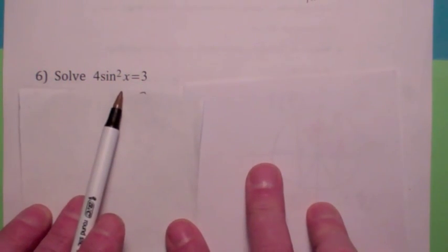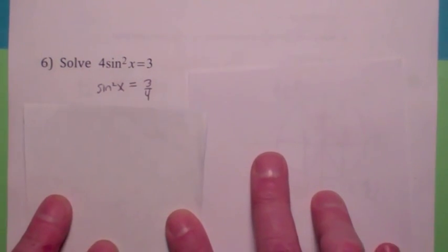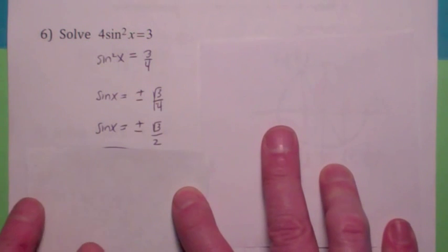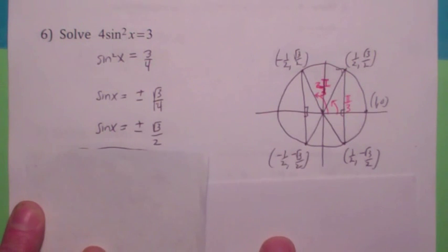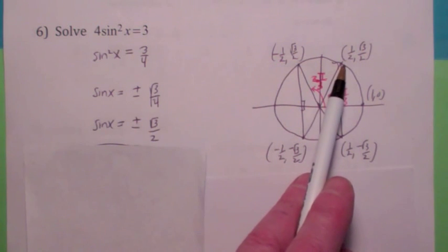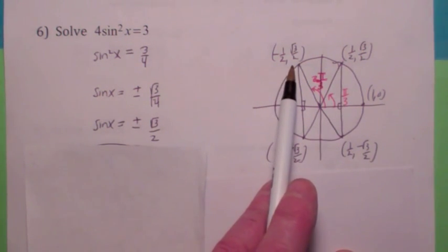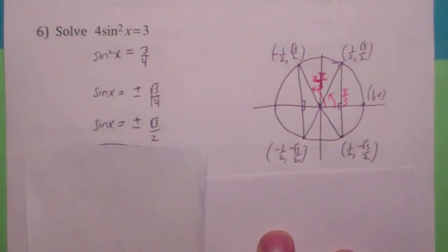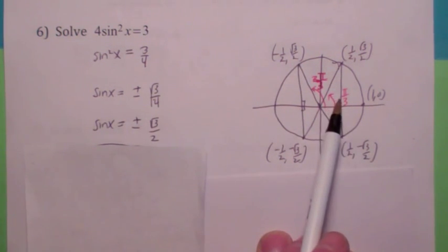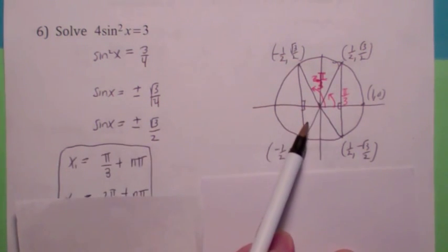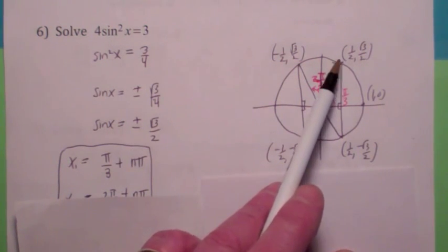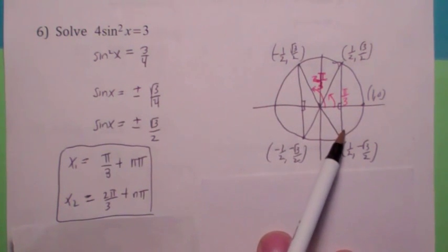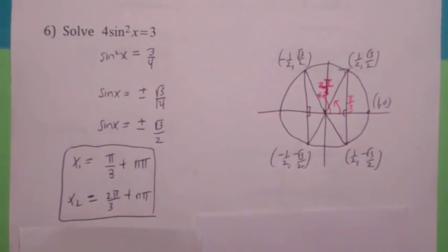In this one, if you want to solve 4 sine squared x equals 3, first divide by 4 to get sine squared x equals 3 fourths. When you take the square root, don't forget the plus or minus, so you get sine of x equals plus or minus square root of 3 over 2 — another known angle. There's one in the first quadrant at pi over 3, one in the second quadrant at 2 pi over 3, one in the third quadrant at 4 pi over 3, and 5 pi over 3 in the fourth quadrant. Using pi over 3 as the base angle and adding multiples of pi covers those coterminal with pi over 3 and 4 pi over 3. Using 2 pi over 3 plus n pi covers the rest. So all possible solutions are x equals pi over 3 plus n pi and x equals 2 pi over 3 plus n pi.